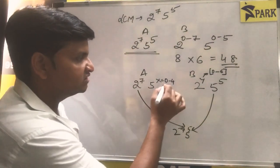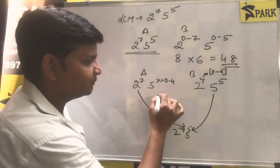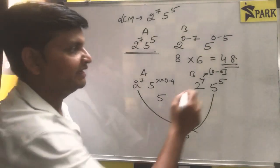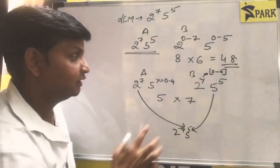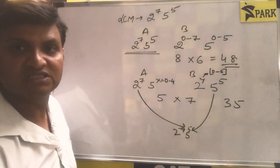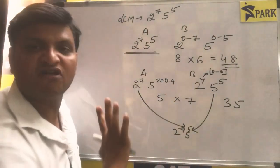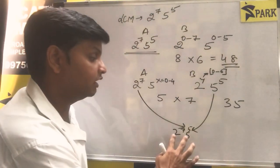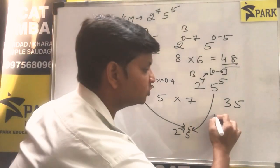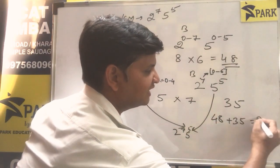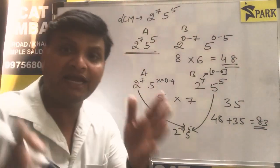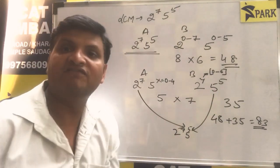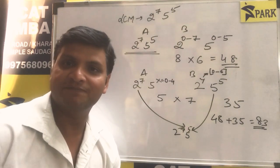So how many cases will there be? X from 0 to 4 means 5 cases, and Y from 0 to 6 means 7 cases. So there are 35 combinations, which means 35 more pairs of numbers where the LCM is going to be 2 raised to 7, 5 raised to 5. So a total of 48 plus 35, that is 83 cases. There can be 83 possible sets of numbers where the LCM is 2 raised to the power of 7, 5 raised to the power of 5. I hope you understood. Thank you.